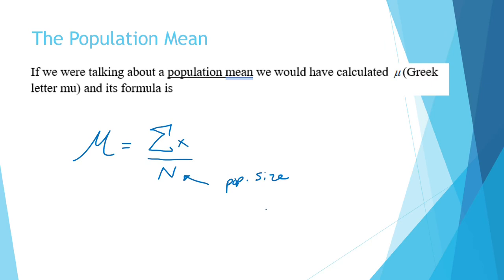So the formula for both population mean and sample mean is essentially the same, except we use mu for the population and x-bar for the sample.